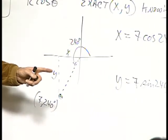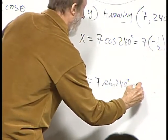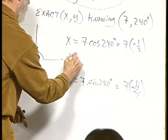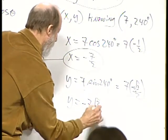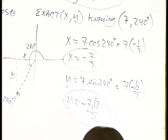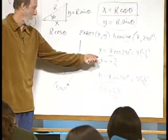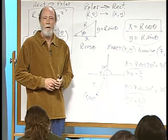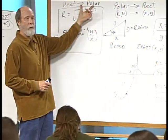Cosine 240 is minus one-half, so x equals 7 times minus one-half equals minus 7/2. Sine of 240 is negative square root of 3 over 2, so y equals 7 times negative root 3 over 2, which is negative 7 root 3 over 2. Textbooks use the 16 common angles to keep refreshing your memory on trig ratios and extract exact answers.